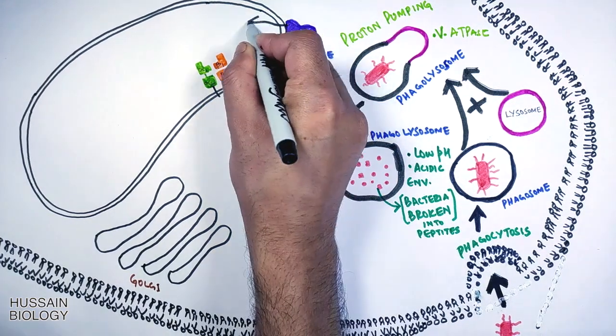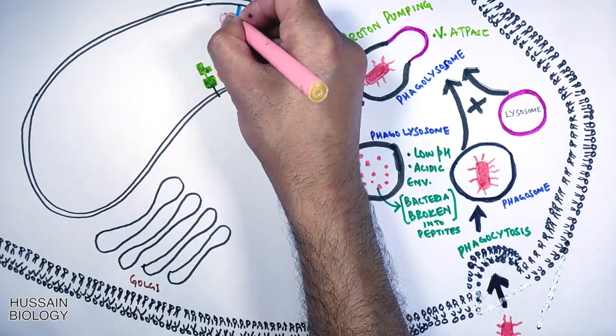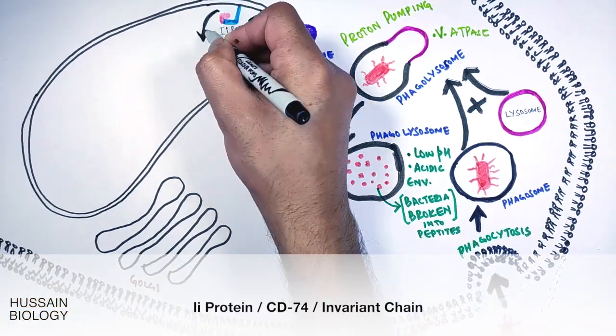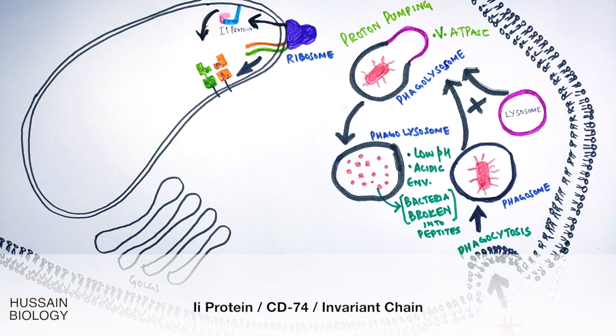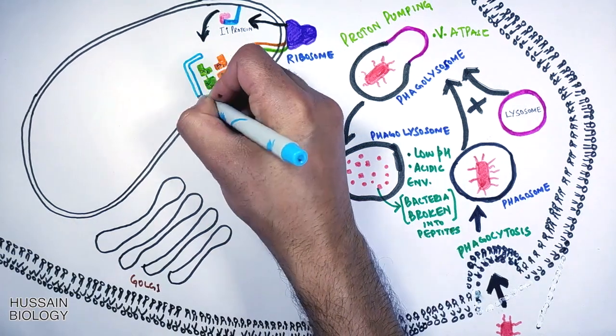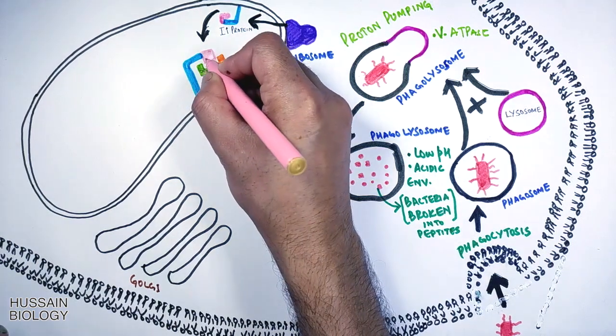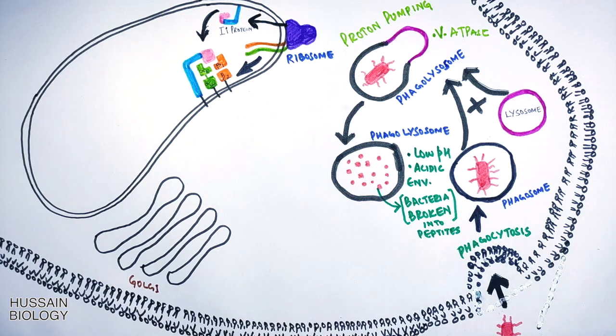Then the ribosome also produces another protein molecule called the II protein, or we can say invariant chain, also known by the name of CD74 molecule. It is a trimer protein. This II protein or invariant chain assembles with the MHC-II molecule and occupies the peptide binding groove of MHC-II molecule as shown in the diagram.